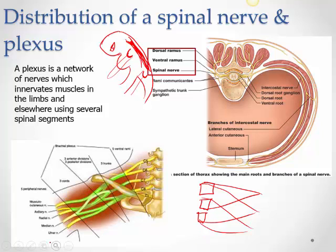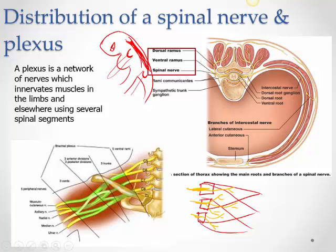Each block of mesoderm is supplied by its own nerve in the fetus. So if a muscle develops from two blocks, it will have two nerves supplying it. You can see that a large number of nerves would need to supply the muscles of the upper limb, all passing from the neck area, below the clavicle, through a very narrow space. The same applies to the lower limb, so there would be a big traffic jam in that area.